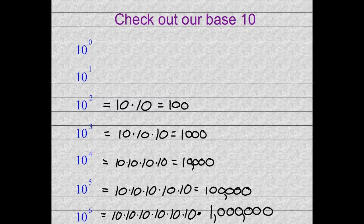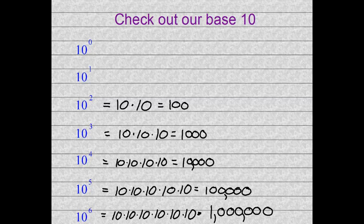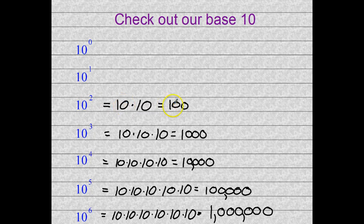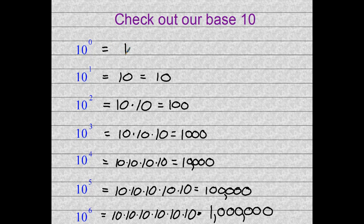So if we follow the pattern going upwards now, 10 to the sixth is 1 with 6 zeros. The next one up is 1 with 5 zeros. 10 to the fourth is 1 with 4 zeros. 10 to the third, or 10 cubed, is 1 with 3 zeros. 10 squared is 1 with 2 zeros. 10 to the first would be a 1 with 1 zero. And then let's finish it off with this new guy called 10 to the zero power. Well, that would be a 1 with zero zeros.